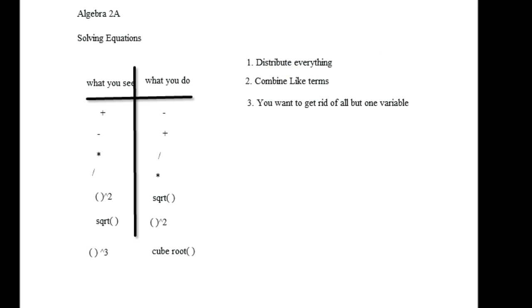Combine like terms, pretty easy stuff. Now, real fast, all three of these. Sometimes you'll be doing step number one and then you go on to step number three because there's nothing to combine. Sometimes you'll just start with combine like terms and then you'll get rid of one variable. And then sometimes you'll just distribute and then you solve. So it just depends upon the problem. But these are the three main ideas you want to do first.